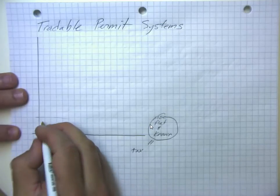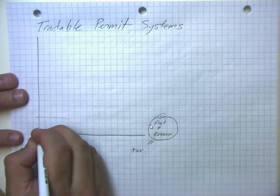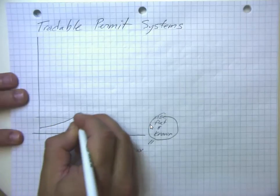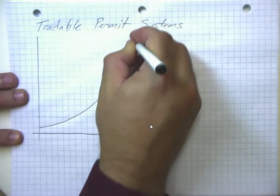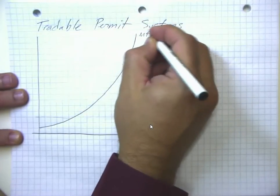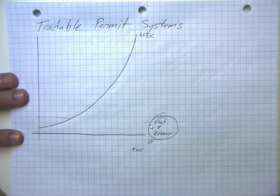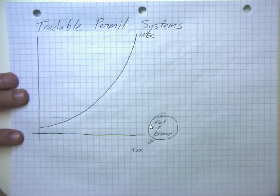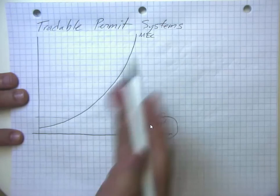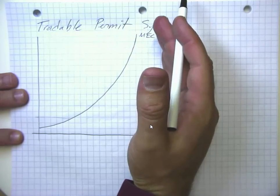But on the other hand, there's lots of things where the marginal external cost maybe goes something like this. So in that case, we're really worried about keeping the amount of pollution under control more. So we really need to keep it from getting into this really high region here.